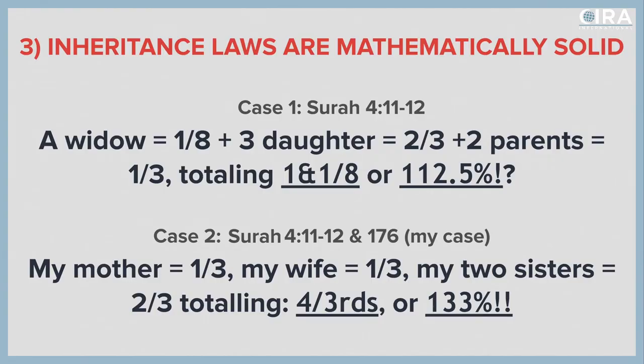More recently, I decided, what would happen if I died? I wanted to find out, because when I died, I still had my wife — my wife would be alive — and I have two sisters. So I went back to chapter 4, verse 11 and 12, and that's case number two, my case. If I died and my mother was still living, she would get a third. My wife would get a third, and my two sisters would get two thirds. And we're still going over — four thirds of 100%, which is 133%.